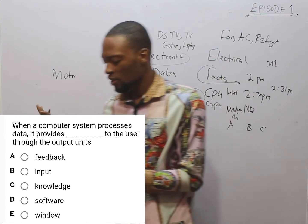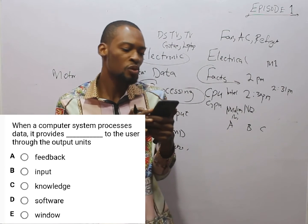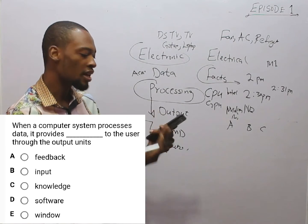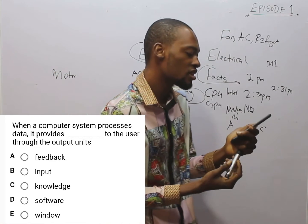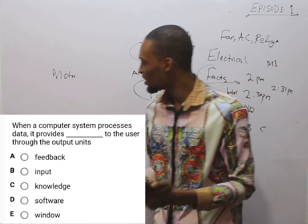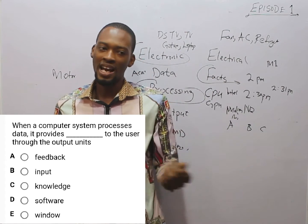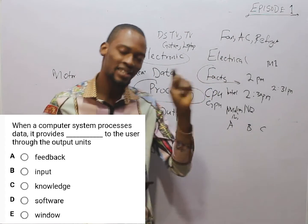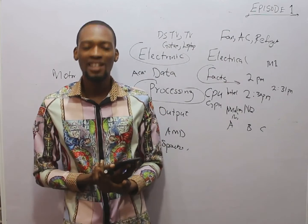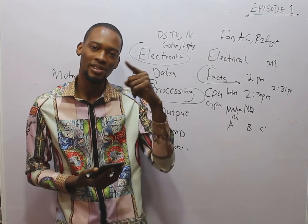So, we have been able to answer the question. When a computer processes data, it provides feedback to the user through the output unit. The answer is feedback — not inputs, not knowledge, not software, and not windows. This brings us to the end of this episode. I hope you found this helpful. I am Isaac, and this is Flash Learners. Feel free to subscribe to this channel, tell your friends about the Flash Learners series, and don't fail to check out my other videos. A link to episode 2 is below. Thank you.